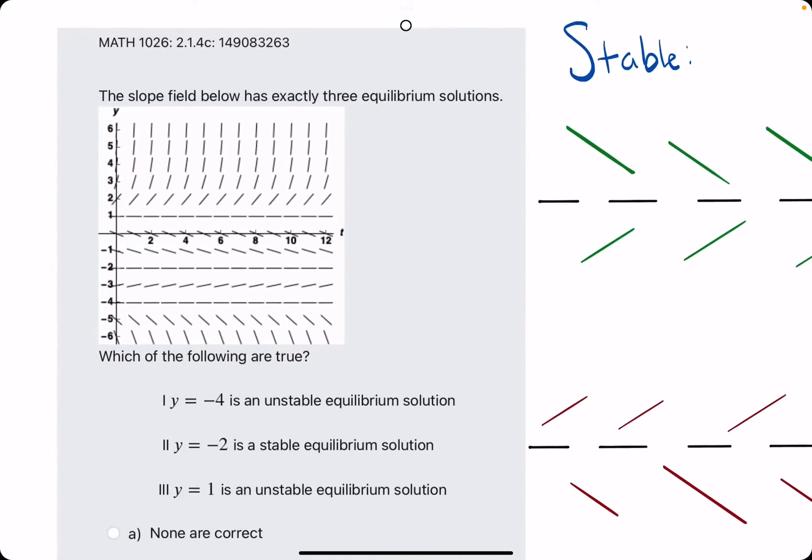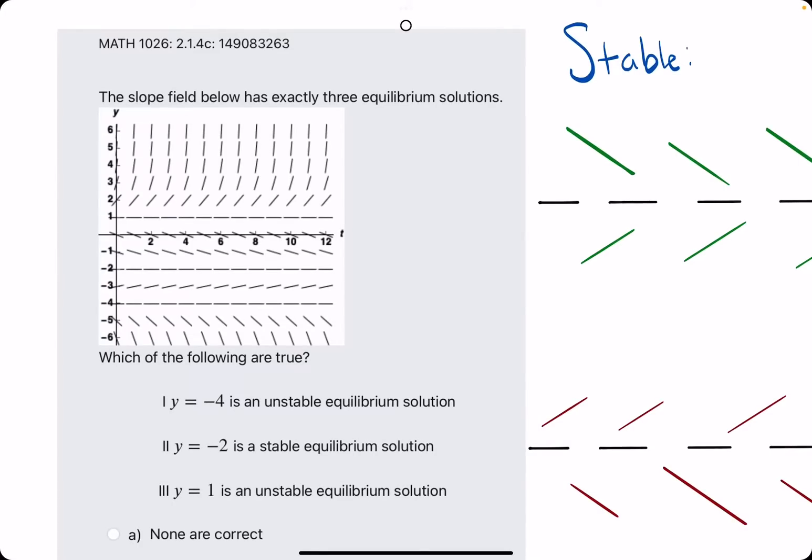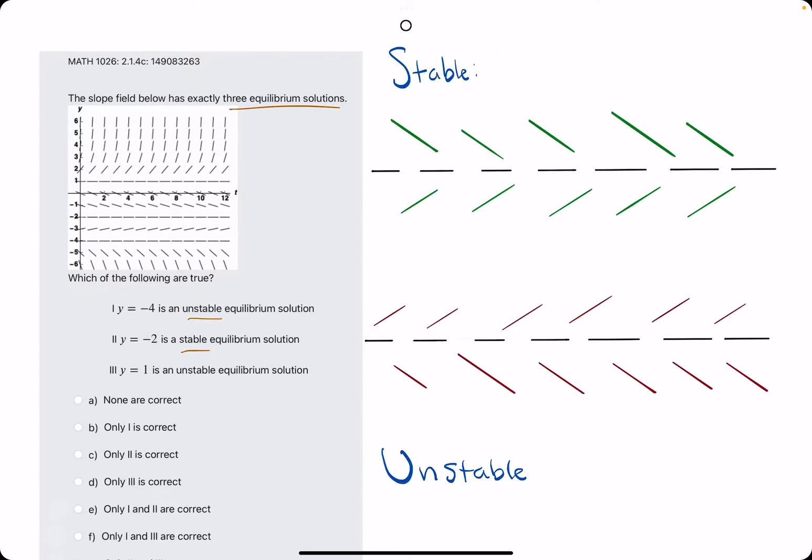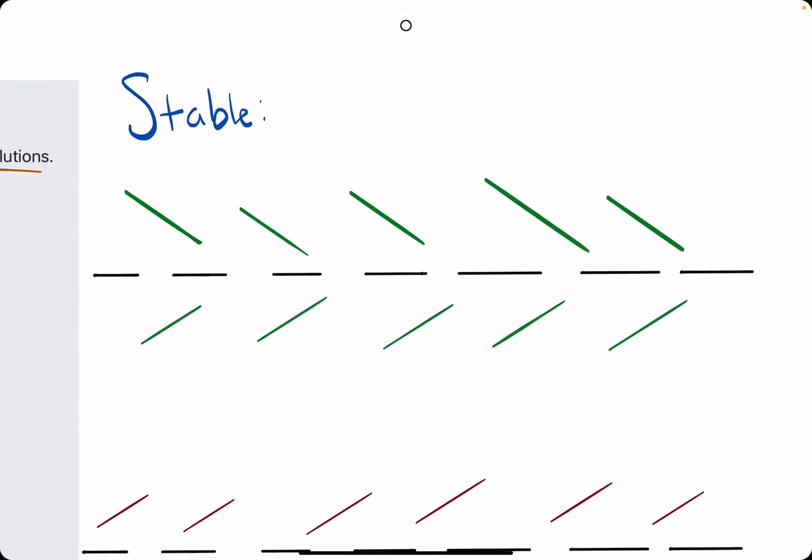Okie dokie. In this problem, they tell us that the slope field has three equilibrium solutions, so nothing new so far. But then they ask about unstable versus stable. So what does that mean? Let's talk about it.